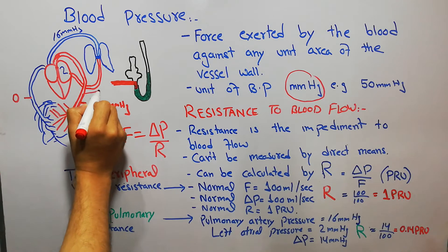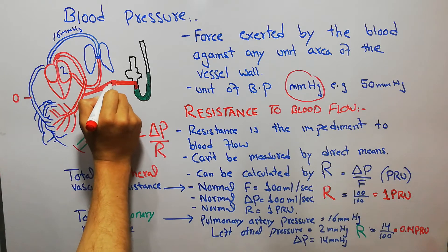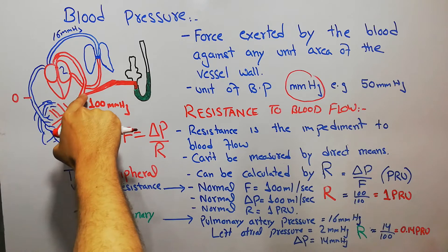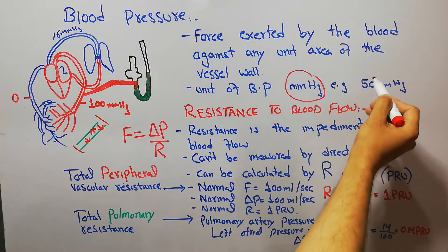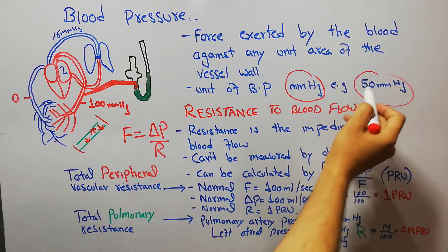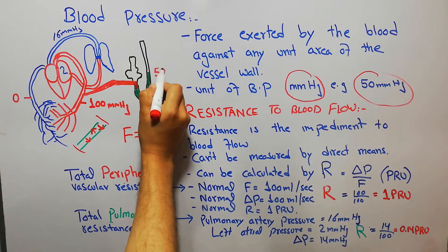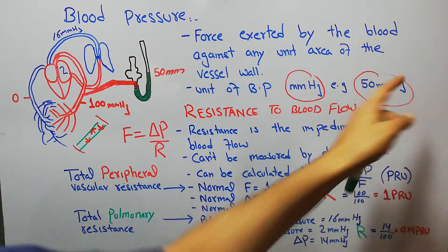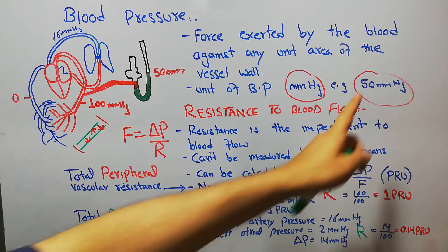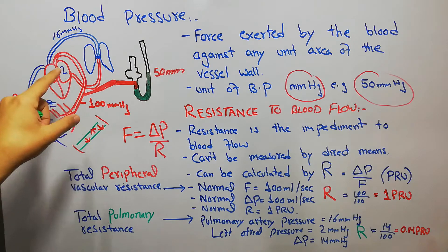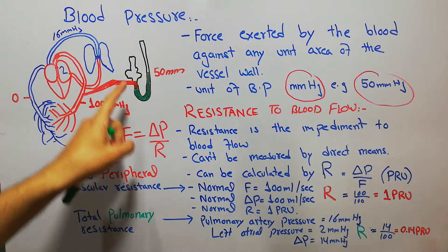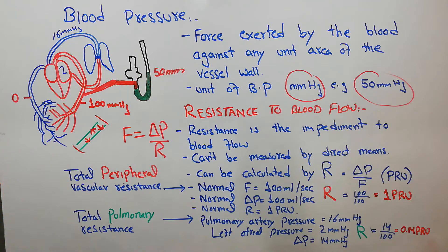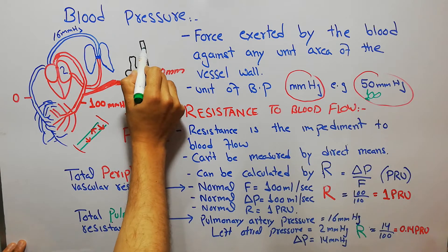If we connect a blood vessel to a manometer — a device that measures blood pressure — the mercury column rises according to the pressure. For example, if the blood pressure in the artery is 50 mm of mercury, it will raise the mercury column by 50 mm. If the pressure is 100 mm of mercury, it will raise the column by 100 mm.